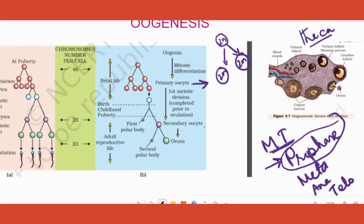It further undergoes certain differentiations and forms something called a Graafian follicle. But remember — through all these stages, only outside changes are happening. Through primary follicle, secondary follicle, tertiary follicle, and Graafian follicle, the inside thing is still the primary oocyte. It has not completed prophase 1; it is still resting at that phase.